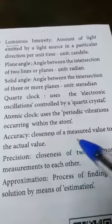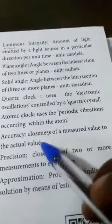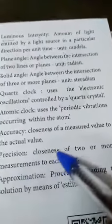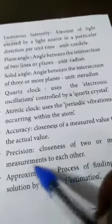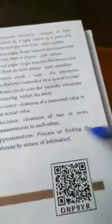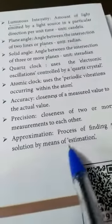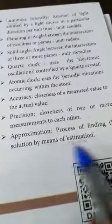Accuracy: closeness of measured value to the actual value. Precision: closeness of two or more measurements to each other. Approximation: process of finding the solution by means of estimation. I hope you understood the topic.